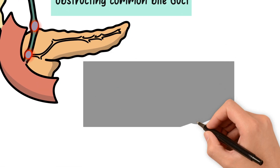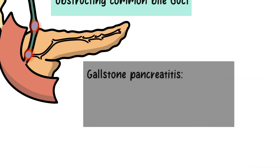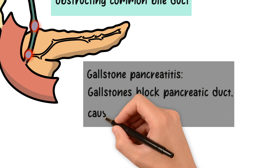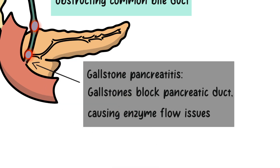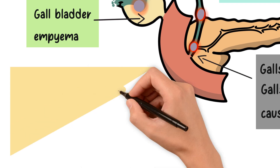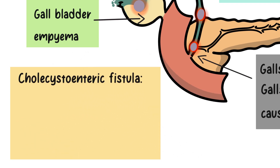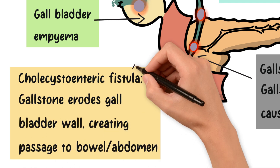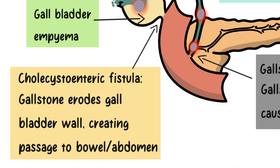Another rare complication is gallstone pancreatitis, where gallstones pass from the gallbladder into the biliary tract and block the pancreatic duct, which is responsible for carrying digestive enzymes from the pancreas to the small intestine. Lastly, we have cholecystoenteric fistula, in which a large gallstone erodes through the gallbladder wall, creating a passageway, or fistula, into the small bowel or another part of the abdominal cavity.